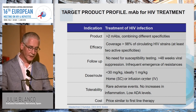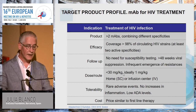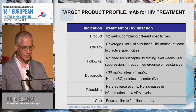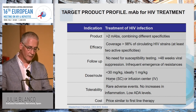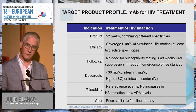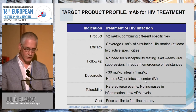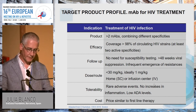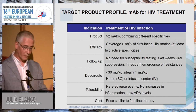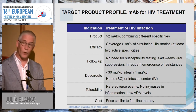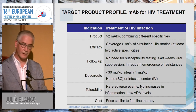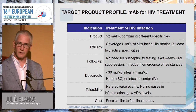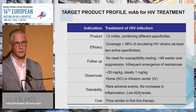Doses should be lower than 30 mg/kg—ideally reduced to 1 mg/kg with highly potent antibodies. Administration can be done at home subcutaneously or at infusion centers intravenously. Tolerability should be excellent with rare adverse events, no increases in inflammation, and low anti-drug antibodies—since long-term treatment requires avoiding immune responses that would remove the antibodies from circulation.